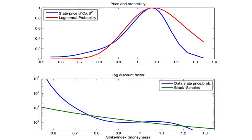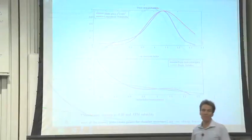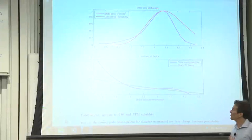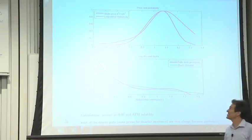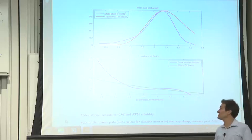In fact, these extreme left tails, the 60, 70, 80, the state price is way, way above the probability. The log-normal distribution says that a 20, 30, 40 percent decline just shouldn't happen that often. The state prices say it costs a lot to buy insurance against events that shouldn't happen that often.